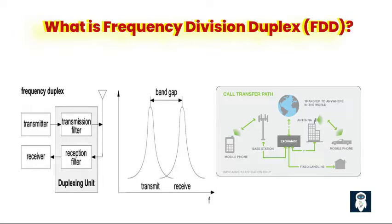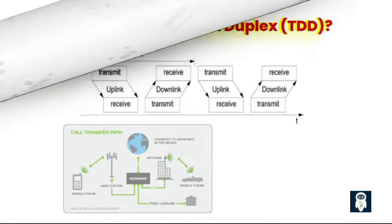By implementing frequency duplexing, mobile communication systems can enable efficient and simultaneous bidirectional communication. This technique enhances the overall capacity and performance of the system, allowing for seamless and reliable communication between mobile devices and base stations.